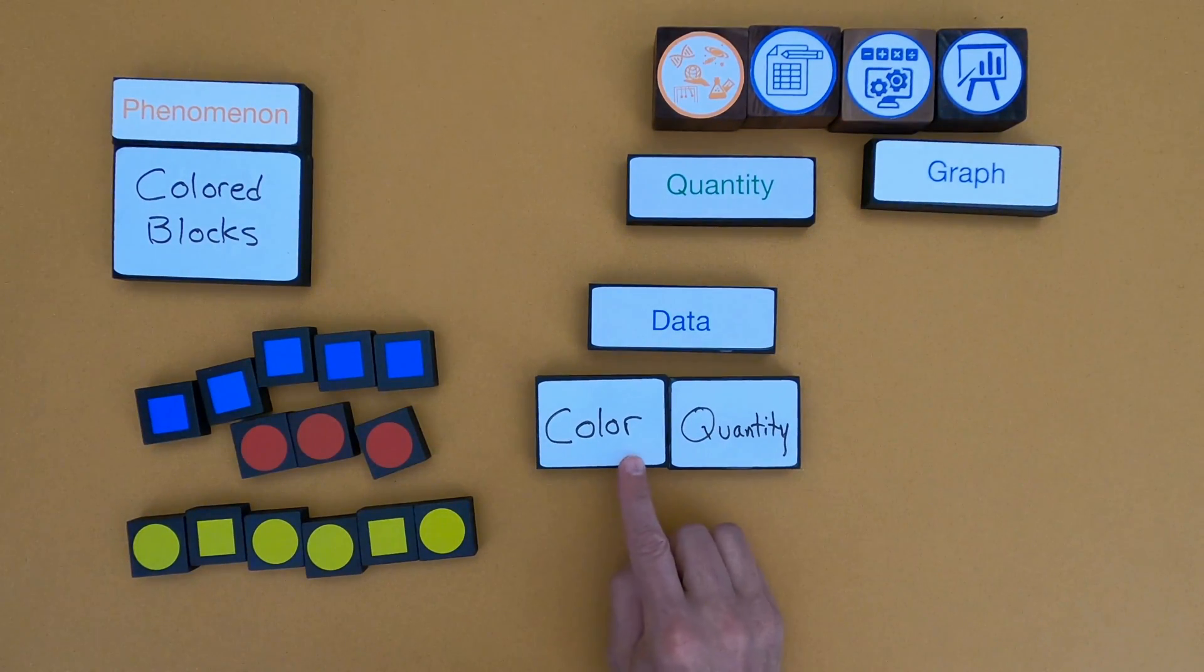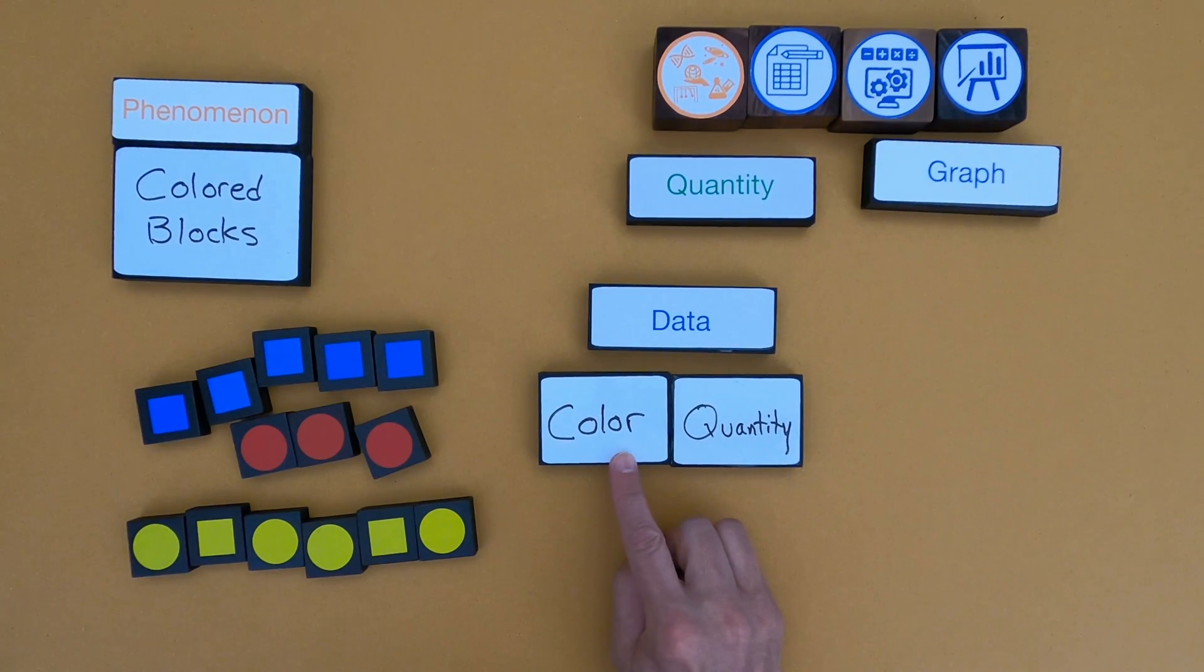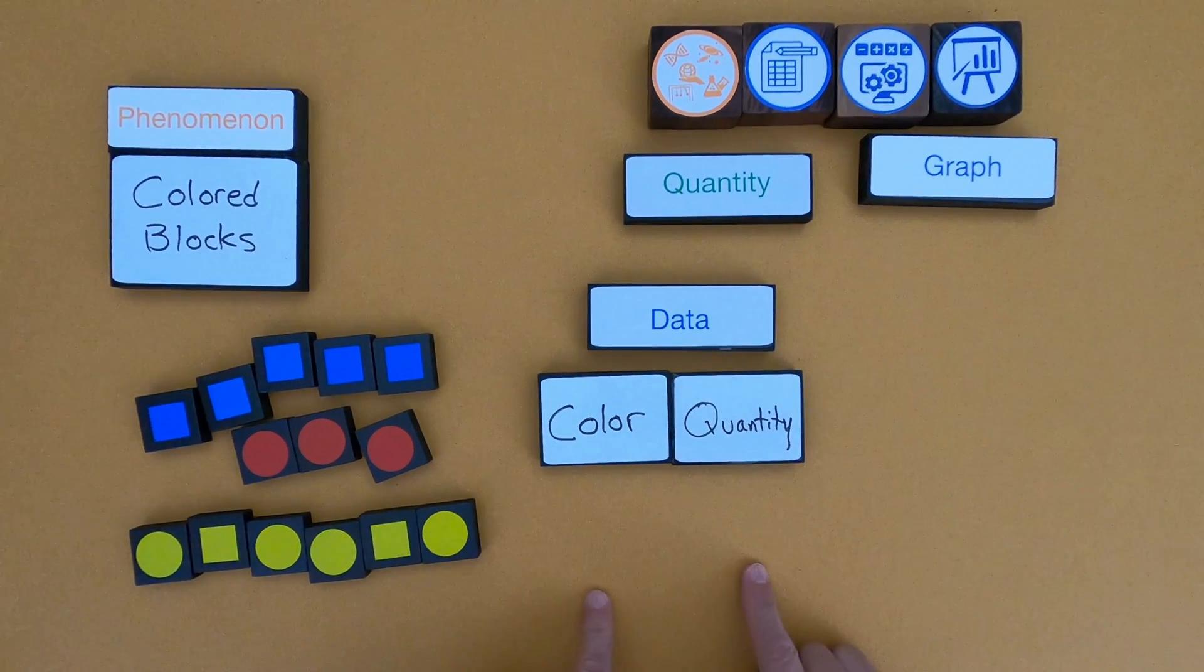So in my data table we're going to have this quality of color, but then we're also going to have quantity, which is the number of each of those. And so let me fill that out on my data table.